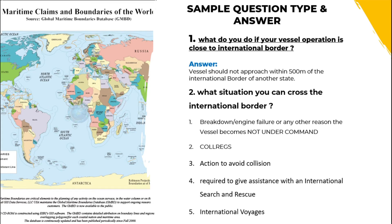What do you do if your vessel operation is close to the international border? The vessel should not approach within 500 meters of the international border of another state. We can cross the international border when we have a breakdown or engine failure or any other reason that makes the vessel not under command, due to collision regulations or action to avoid collision, when we are required to give assistance with an international search and rescue, or when we are on an international voyage.